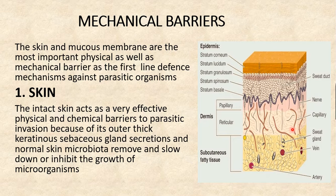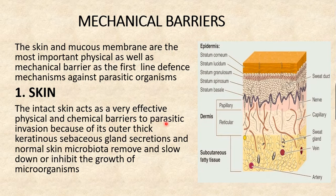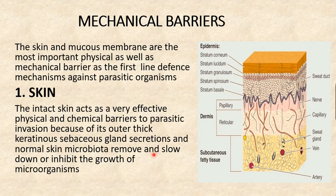In summary, the intact skin acts as a very effective physical and chemical barrier to parasitic invasion because of its outer thick keratinous layer, sebaceous gland secretions, and normal skin microbiota, which remove, slow down, or inhibit the growth of microorganisms.